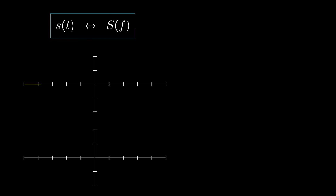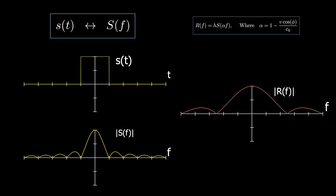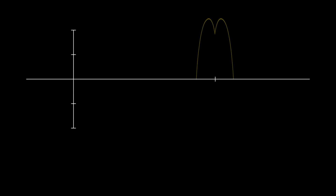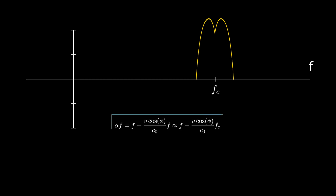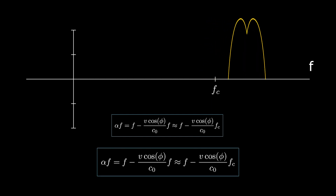For a general transmit signal S(t) with Fourier transform S(f), the received signal takes a specific form where a is an attenuation factor. As you can see, the Doppler effect results in spectral scaling — a compression or dilation in the frequency domain. If the signal is band-limited around the carrier frequency and the bandwidth is small compared to the carrier frequency, we can consider the signal to be a single tone. The Doppler effect then essentially results in a frequency shift, with the Doppler shift being proportional to both the velocity and the carrier frequency.